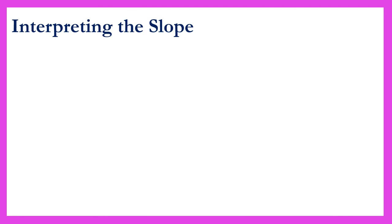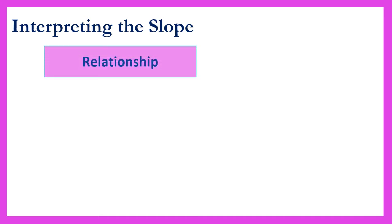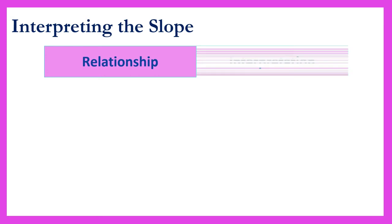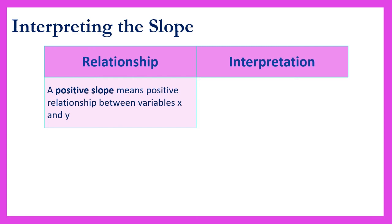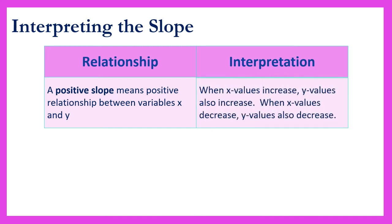Now let's look at the trend or direction of slope. The direction of slope, as represented by the sign, allows us to determine the relationship between the variables x and y, from which we are able to make our interpretations. When the sign of the slope is positive, there is a positive relationship between variables x and y. This means that when x values increase, y values also increase. Similarly, when x values decrease, y values also decrease.